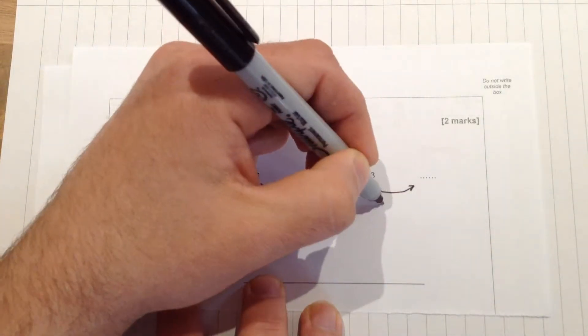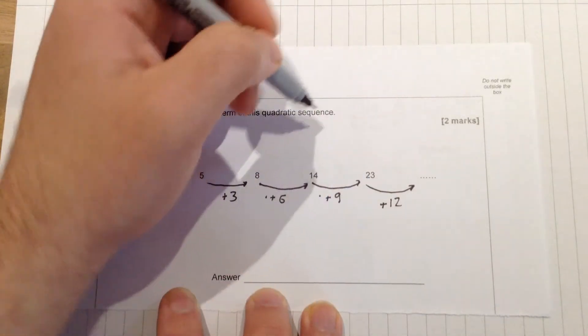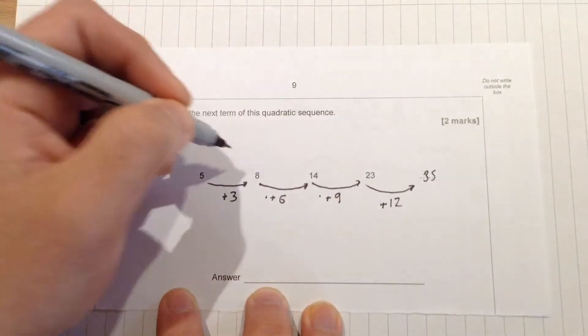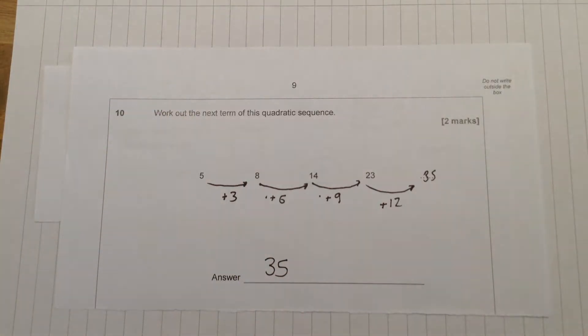I thought to get to the next one we would have to add on 12. 23 add 12 would give us 35. So 35 will be the next term in the quadratic sequence.